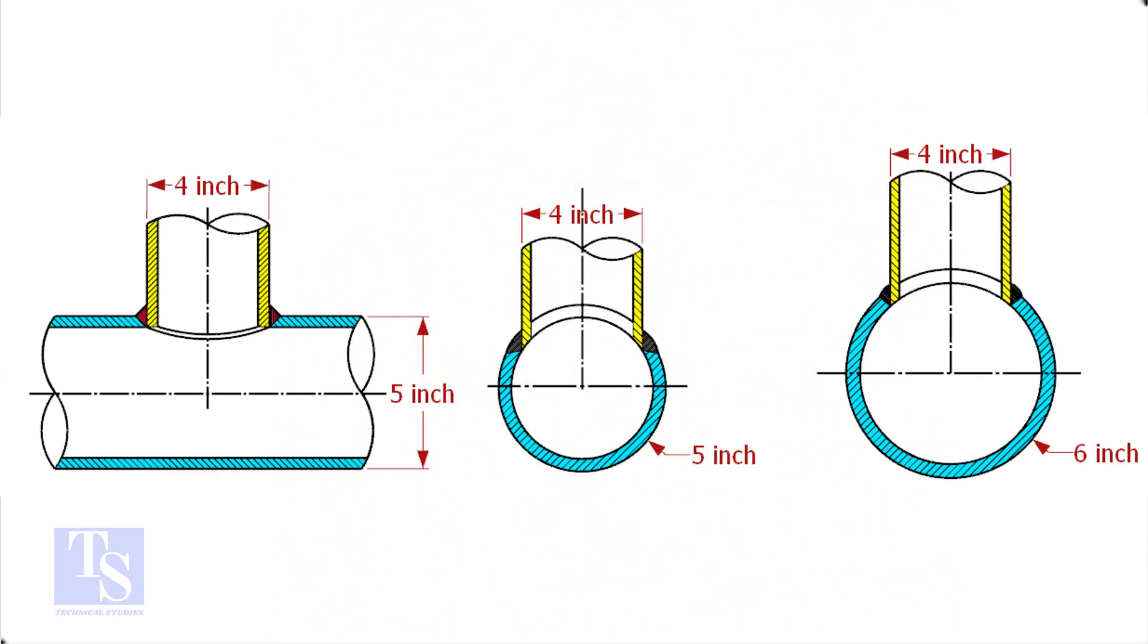In the case of stub-in connections, the branch pipe size is one or more units less than the header size. Suppose both the header and the branch size are the same, a stub-in connection is not possible.